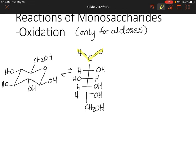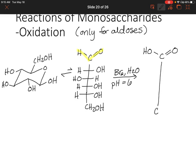There are multiple ways we could turn that into a carboxylic acid. The reagents that we would typically use for this one in particular is bromine and water at a pH of 6. But of course there are other ways to do it too. So that's going to turn our aldehyde into a carboxylic acid. Everything else, again, will stay the same.